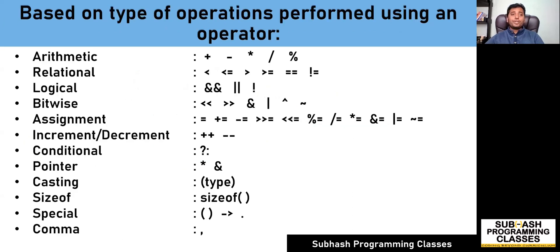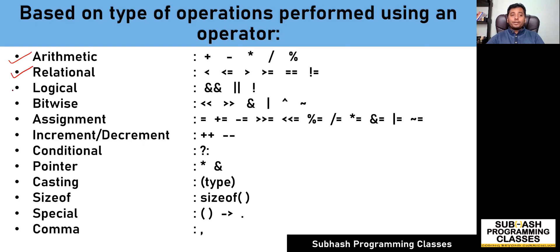Now what is the second way of classification? The second way is based on the type of operations that these operators perform — what are those operators actually doing. Based on the type of operations, your operators can be classified into arithmetic operators, relational operators, logical operators, bitwise operators, assignment operators, increment or decrement operators, conditional operators, pointer operators, casting operators, size of operators, and there are also a few special operators and a comma operator. Arithmetic operators include plus, minus, multiplication, division, and modulo operations.